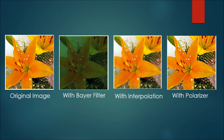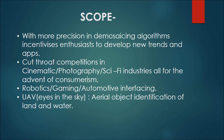The final image after using a polarizer is as close as we can get to an original image, though there is still scope for improvement. In this area, we see many budding enthusiasts and entrepreneurs working on precision in demosaicing algorithms to create new trends and apps under image processing, which leads to cut-throat competition in cinematography, photography, and sci-fi industries. This field also has applications in robotics, gaming, and automotive interfacing. Even for military use, the concept of UAV or Eyes in the Sky is very helpful, identifying aerial objects over land and water.